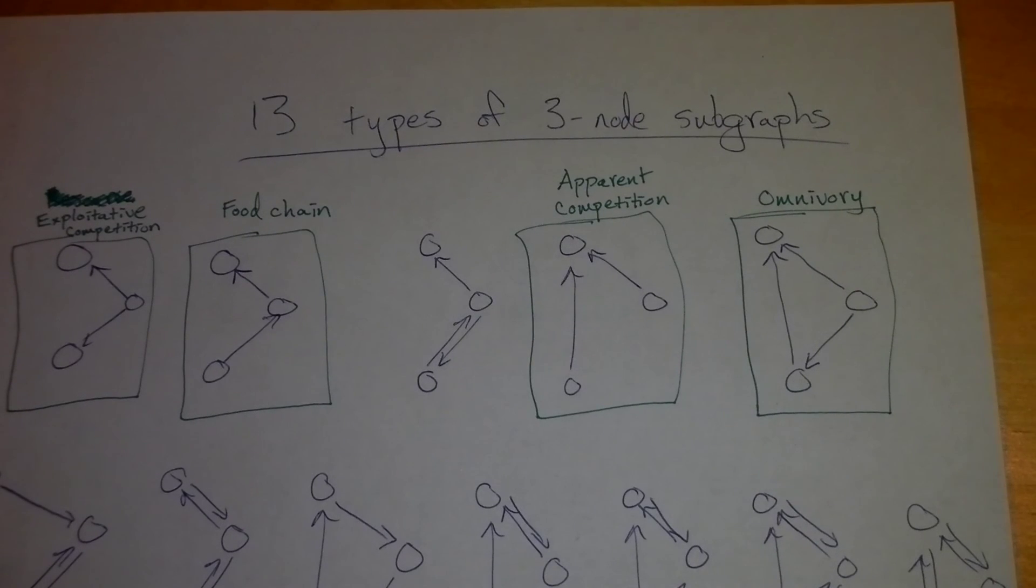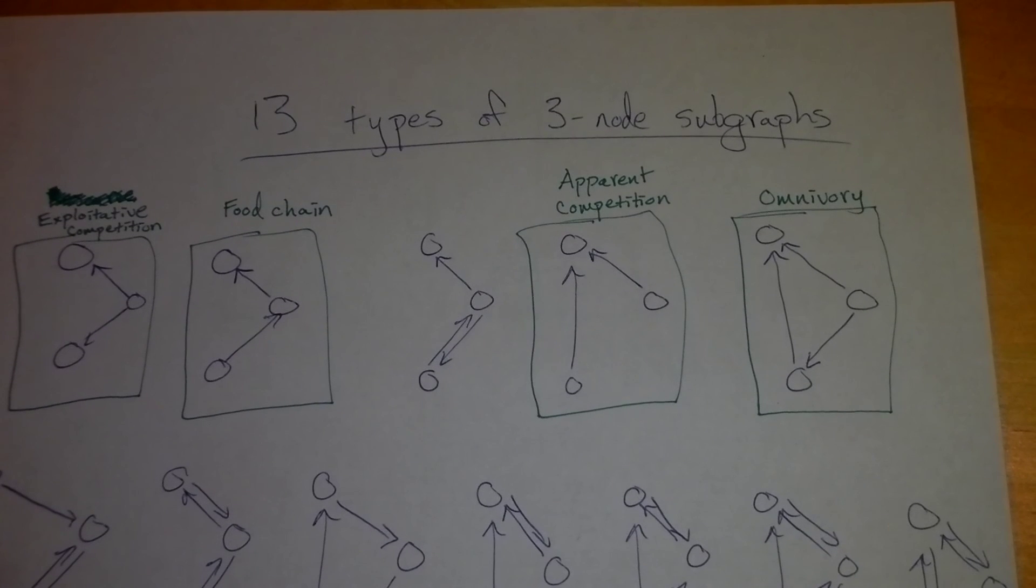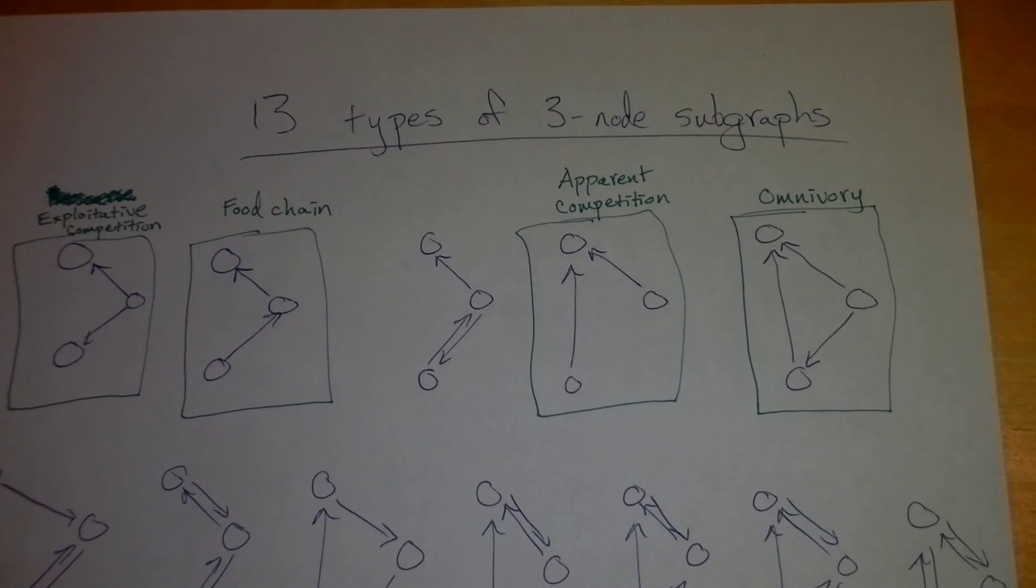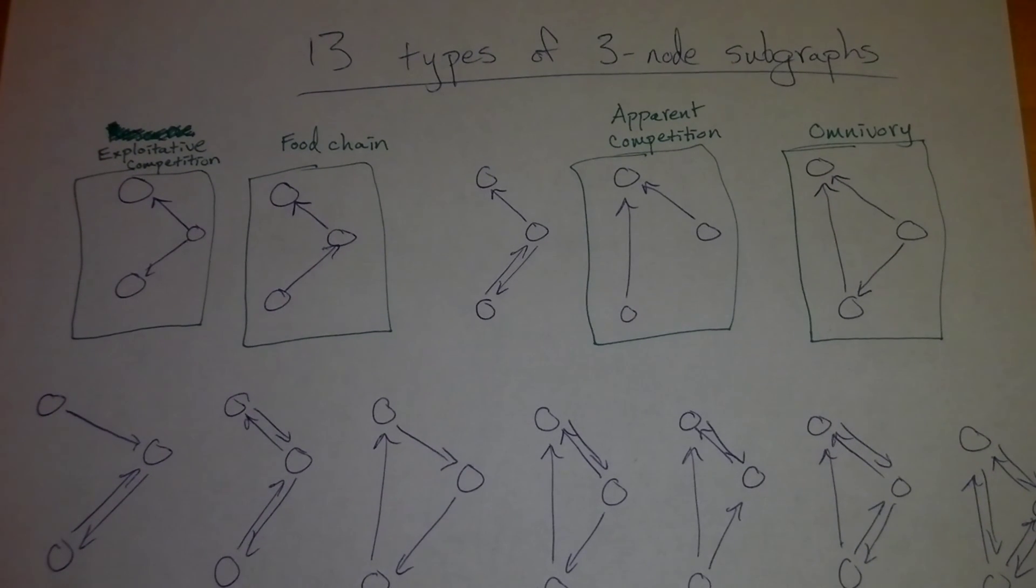And so these are examples of patterns that are reoccurring in food webs, which I find reassuring because lots of work on three species interactions have focused on exploitative competitions, food chains, apparent competition, and omnivory. And so one thing that typically people think about is how these different network motifs kind of form the building blocks of these larger, more complex networks. So I hope that was helpful for understanding network motifs.